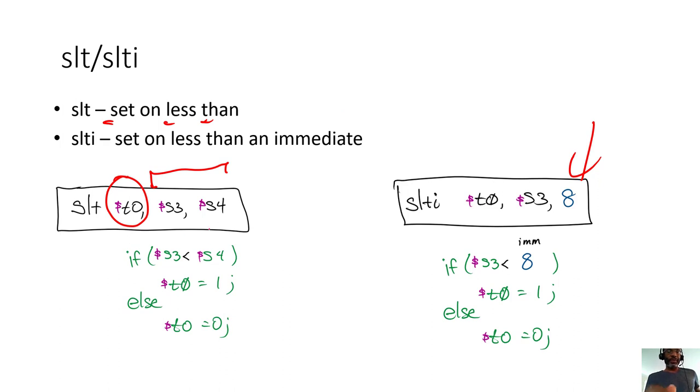What happens is that in this case, for example, if s3 is less than s4, then t0 gets set to a 1. If s3 is not less than s4, then t0 gets set to a 0, essentially a false statement. So in this case, this is also telling you that s3 certainly isn't less than s4, which means it's greater than or equal to s4.